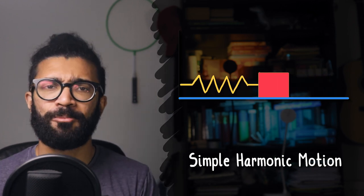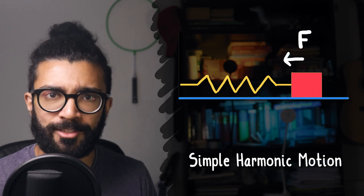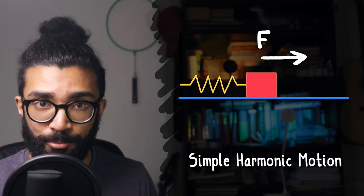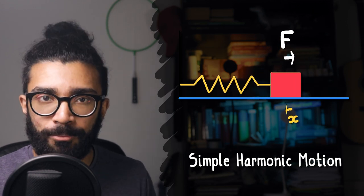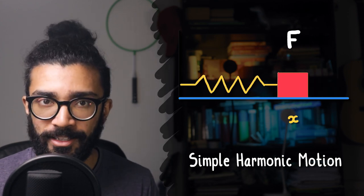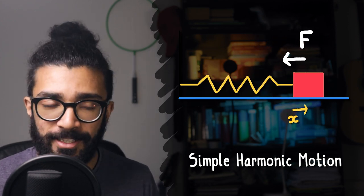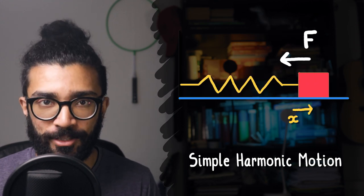Now a characteristic of simple harmonic motion is that the restoring force, the force that causes the mass to move, the force exerted by the spring, is directly proportional to the extension or compression of that spring. In other words, the further the spring is from its natural length, whether it's compressed or extended, the larger the force it exerts on the mass to bring it back to its equilibrium position.